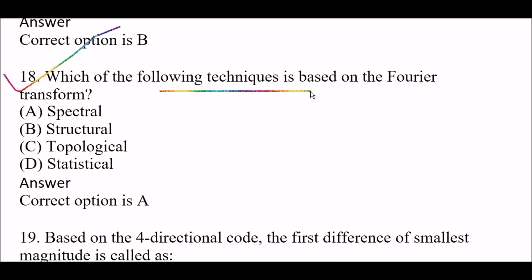Next question: Which of the following techniques is based on the Fourier transform? Option A: spectral, Option B: structural, Option C: topological, Option D: statistical. The right answer is Option A, spectral. Spectral technique is based on the Fourier transform.